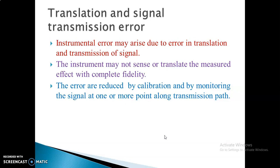The next type is called translation error. This occurs when the instrument may not sense or translate the measured effect with complete fidelity — meaning the output is not showing correctly according to the input. Fidelity is a dynamic characteristic of an instrument. This error can be reduced by calibration or by continuously monitoring the signal and recalibrating the instrument. This is called translation and signal transmission error.